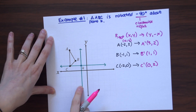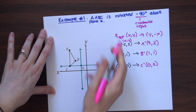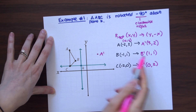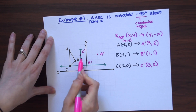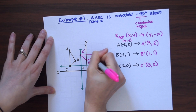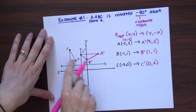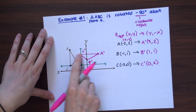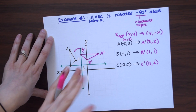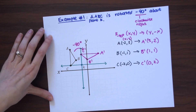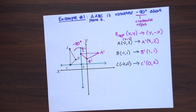Using our new axis from point K as our guide: A prime is at (3, 2), B prime is at (1, 1), and C prime is at (0, 2). Connect the dots and we have our rotated triangle. To check: A to C is 3 units apart, and A prime to C prime is also 3 units apart. We rotated -90 degrees clockwise, and that's our answer.